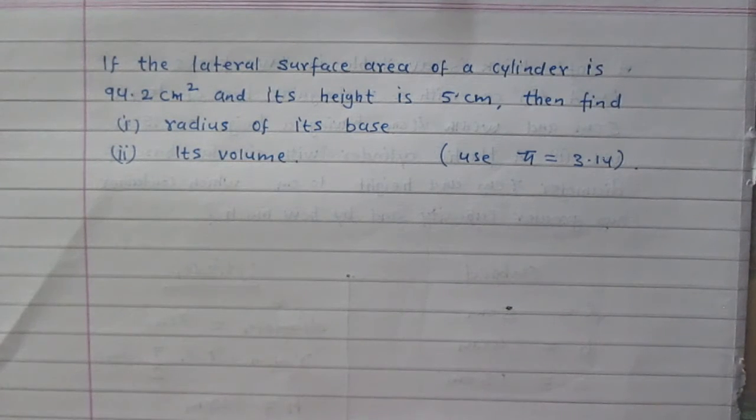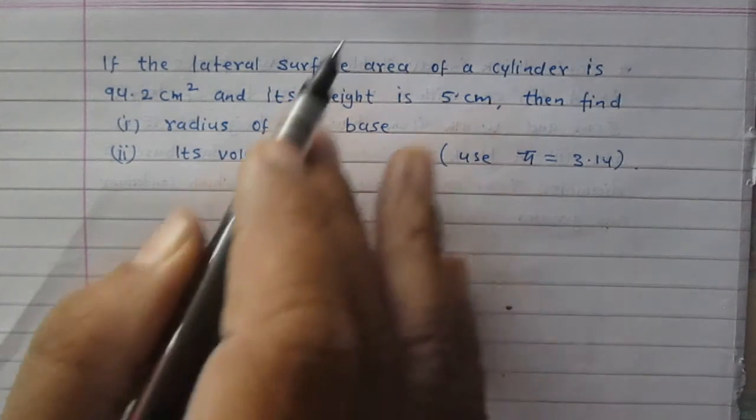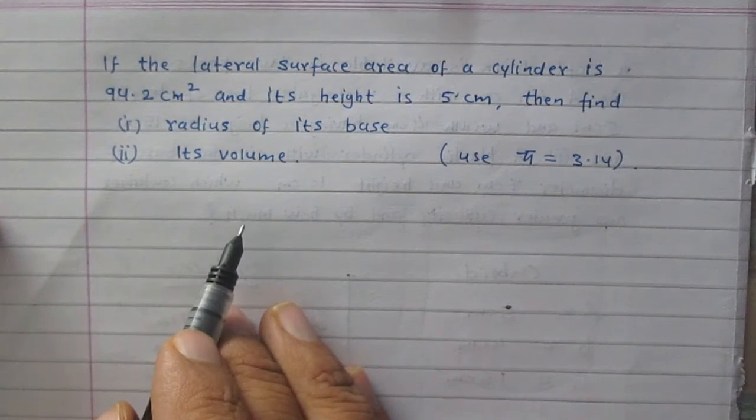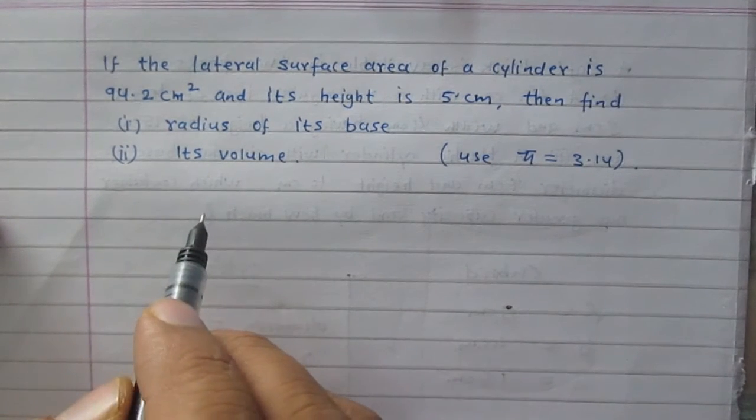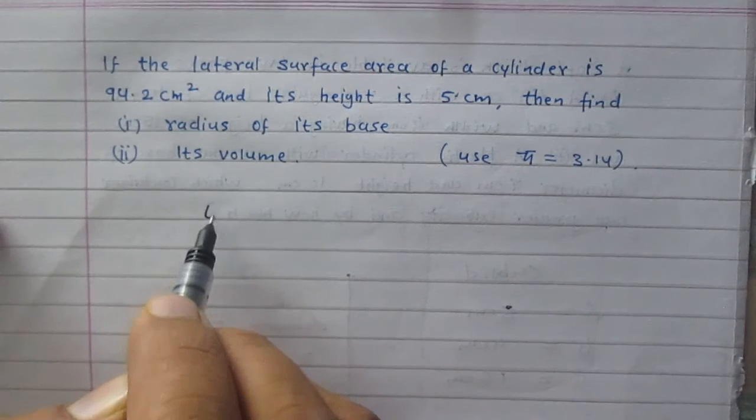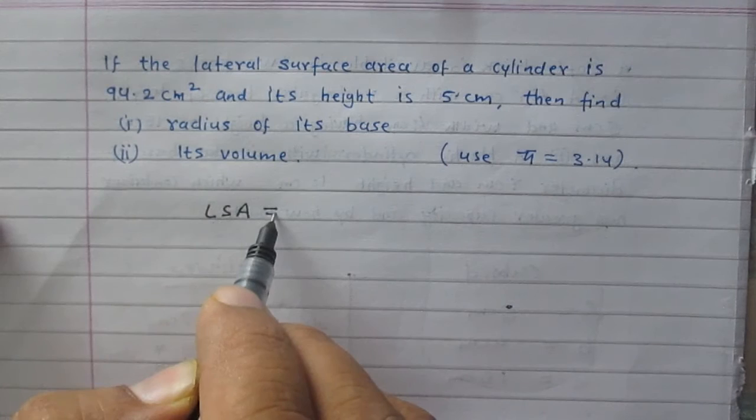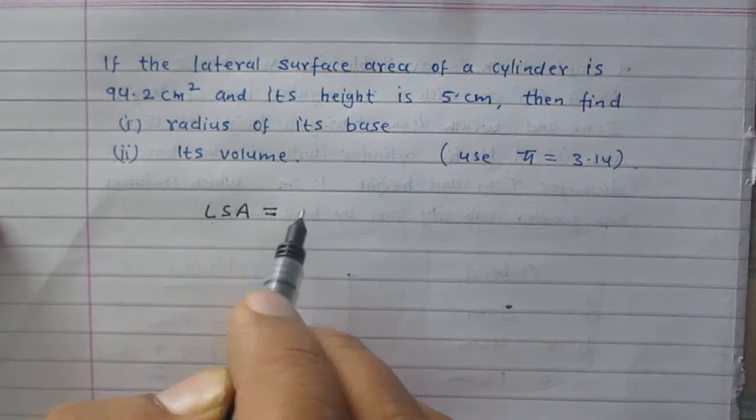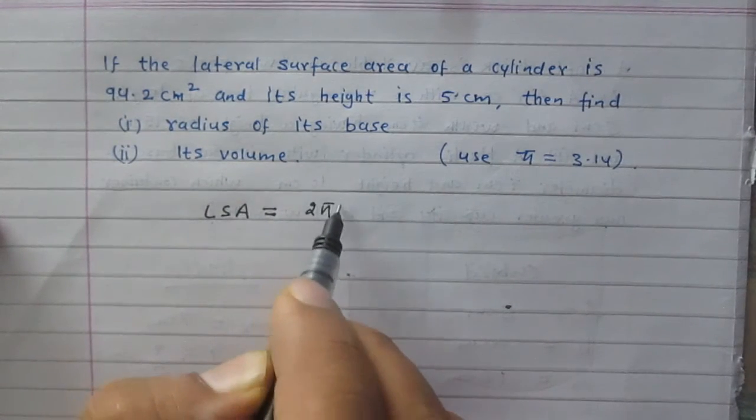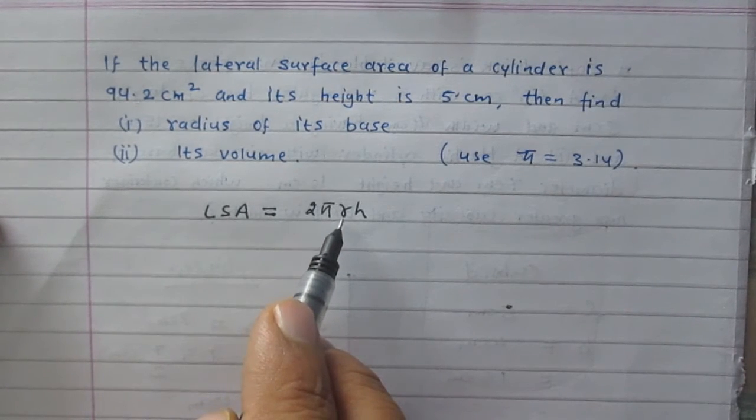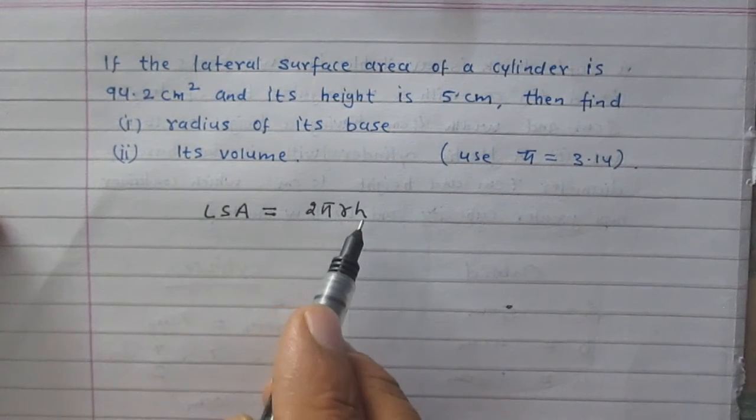We are given a cylinder with lateral surface area 94.2 cm². We know that lateral surface area of a cylinder, or curved surface area, is 2πrh, where r stands for radius of the base and h stands for the height of the cylinder.